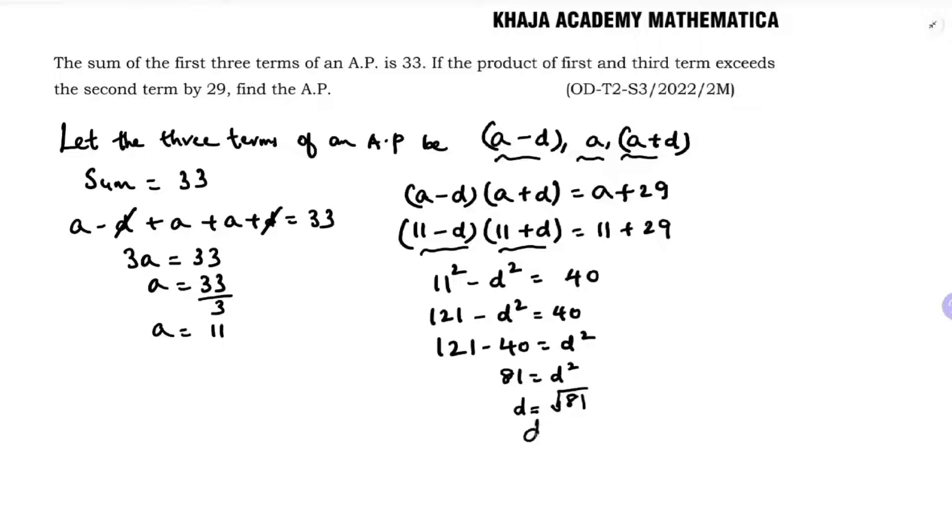Now to write the terms, the three terms are a minus d, a, a plus d. If d is plus 9, then a is 11. So a minus 9, 11, 11 plus 9 gives us 2, 11, 20. This is one series, so the three terms are 2, 11, 20 and so on.